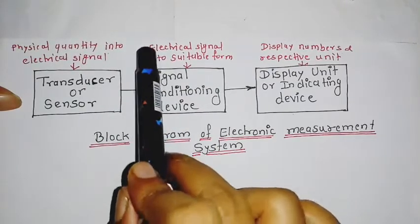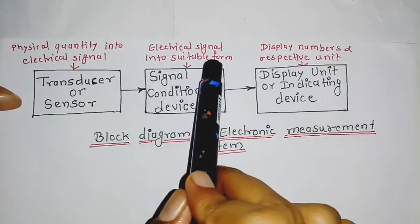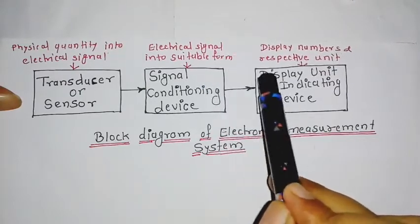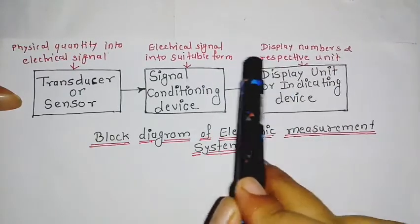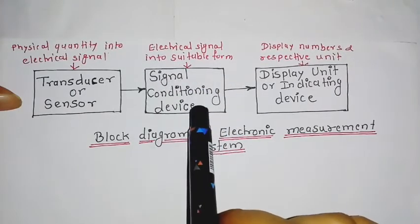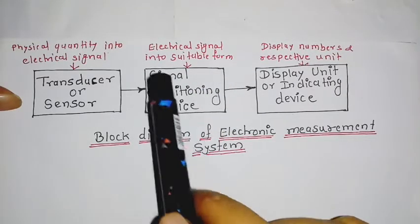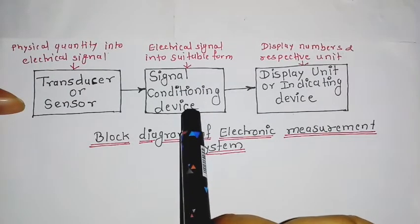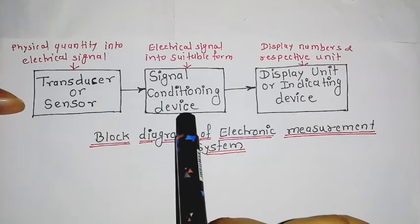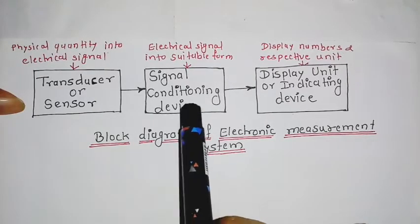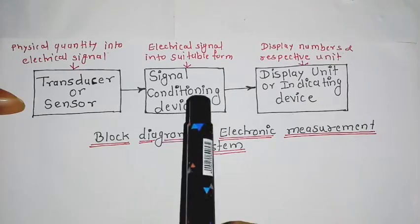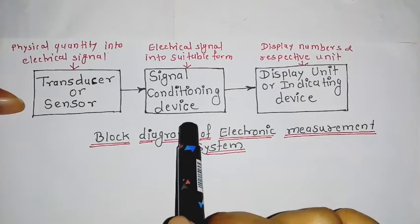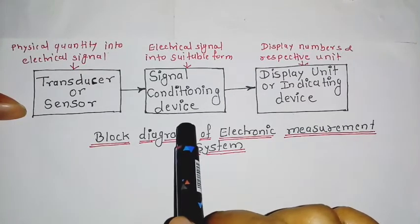The signal conditioning device processes the output signal from the transducer such that it is suitable for the display unit. It involves amplification, buffering, filtering, and scaling.